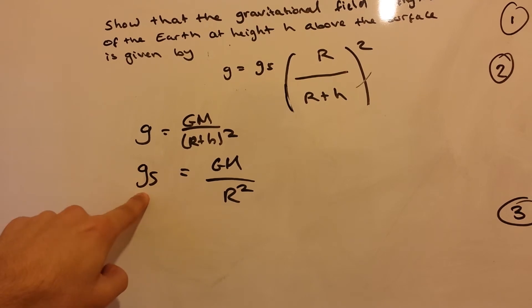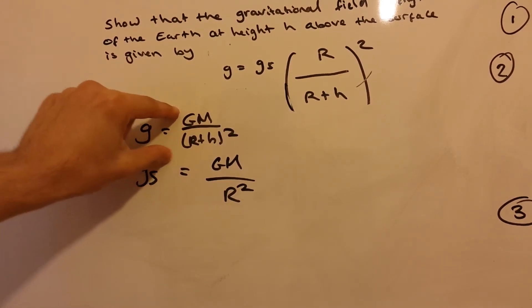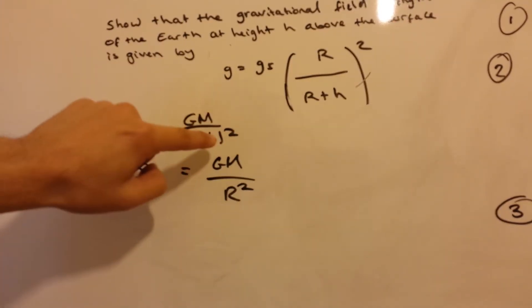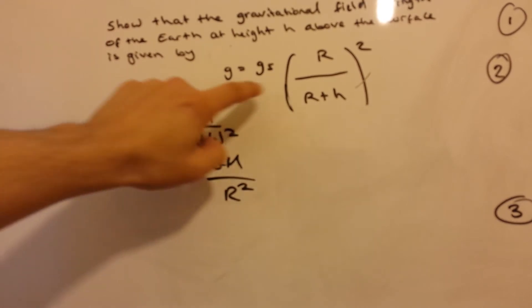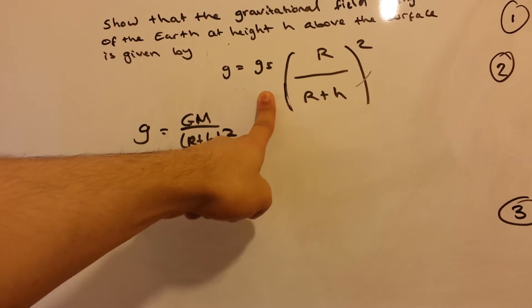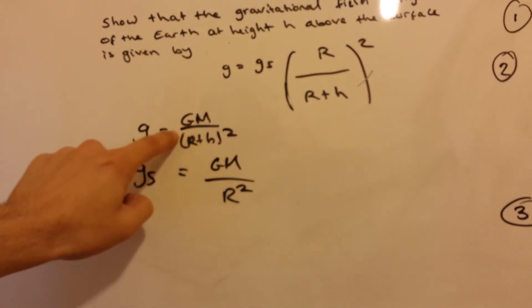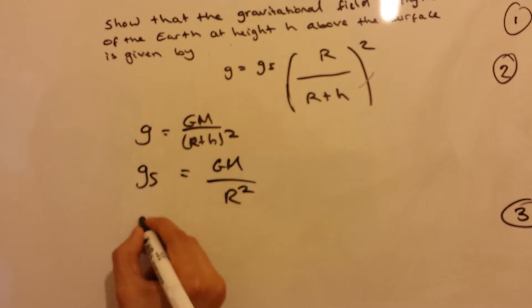So, what we need to do is get this and we need to basically put it into this equation. But how do we do that? What's not there? There's GM here and there's no GM here. There's g_s there while there isn't g_s here. So, that means there has to be some substitution going on.